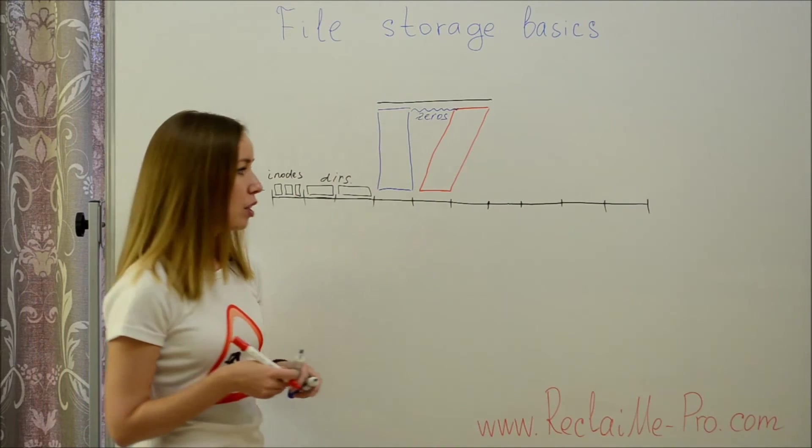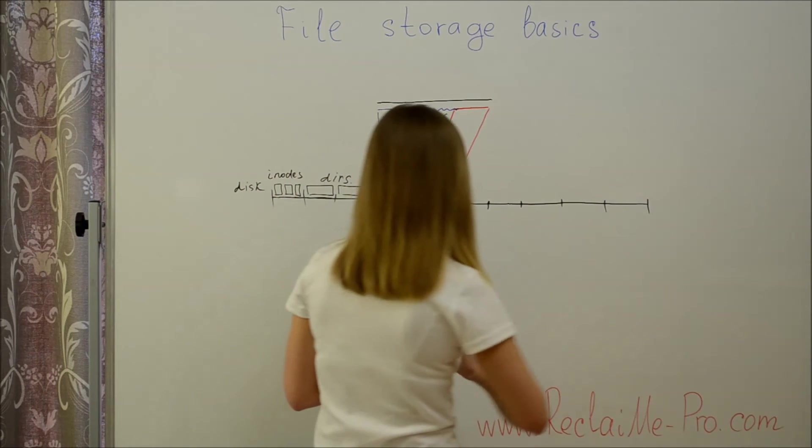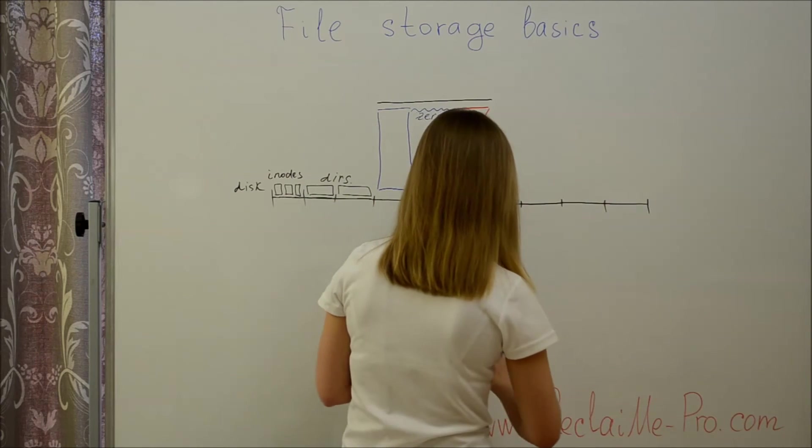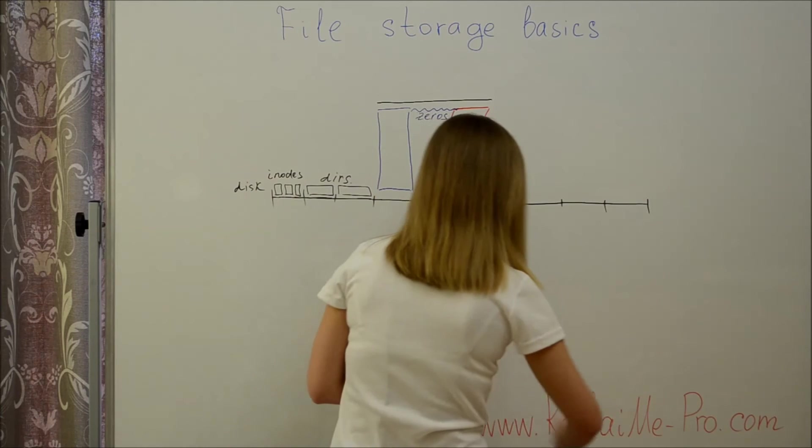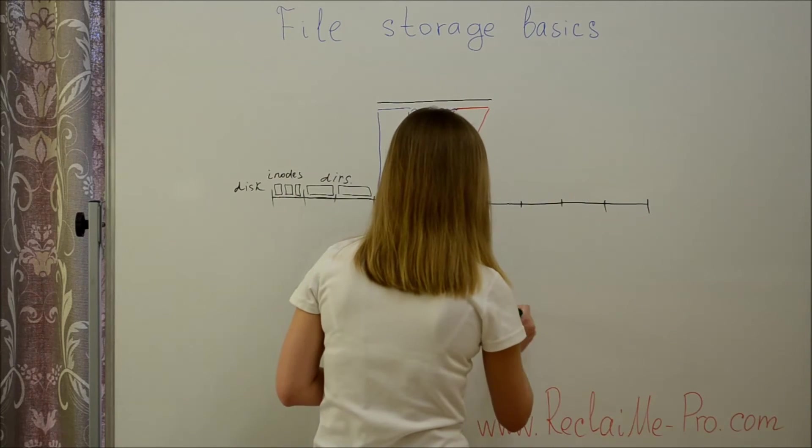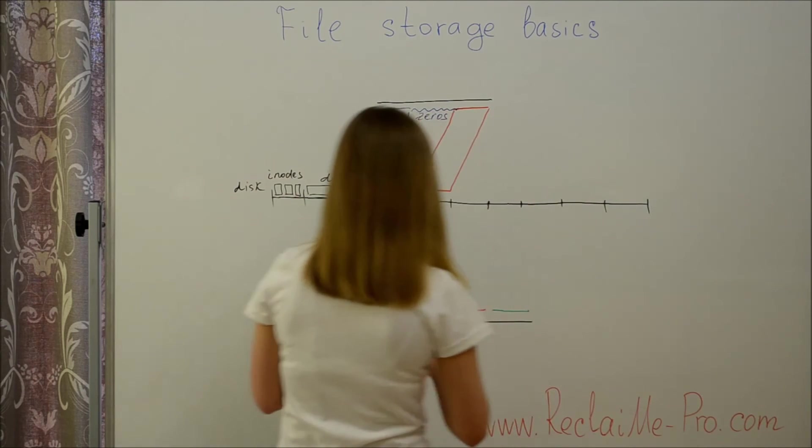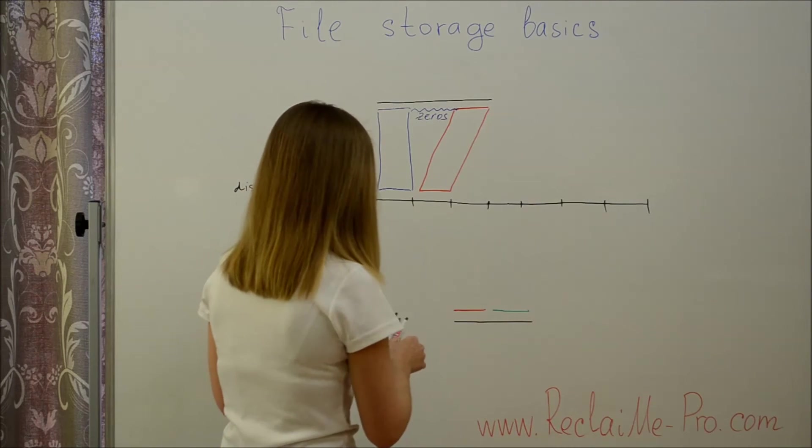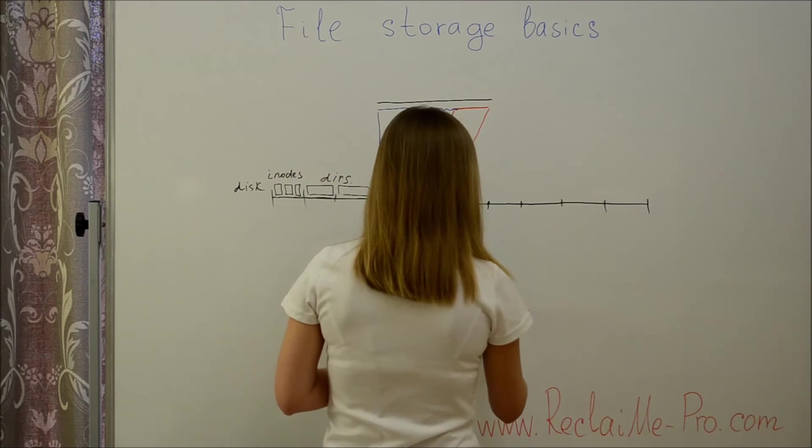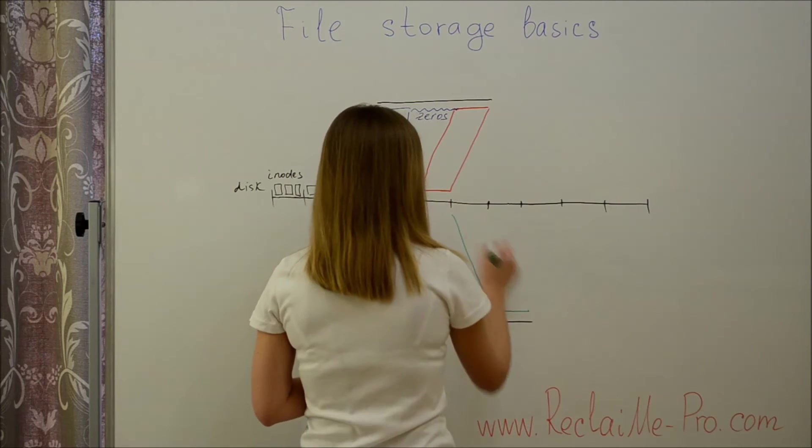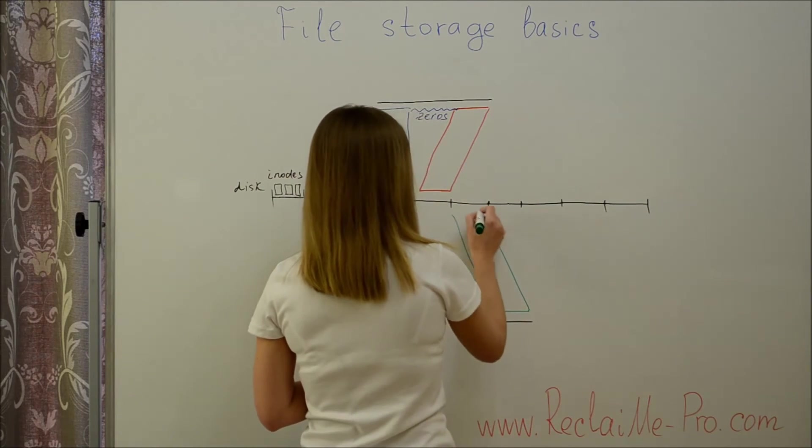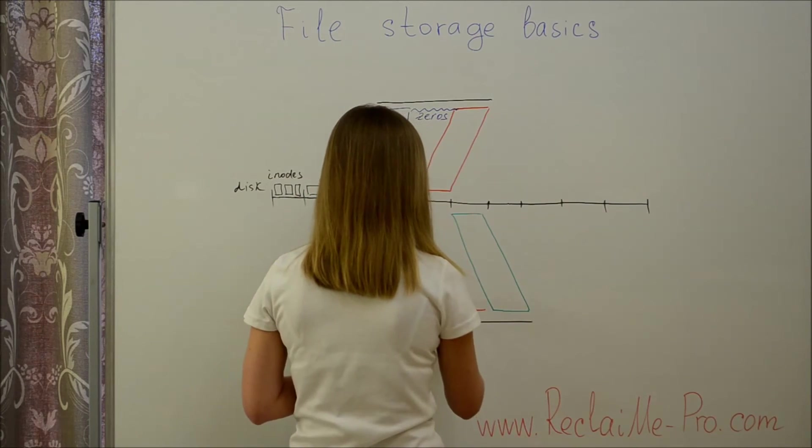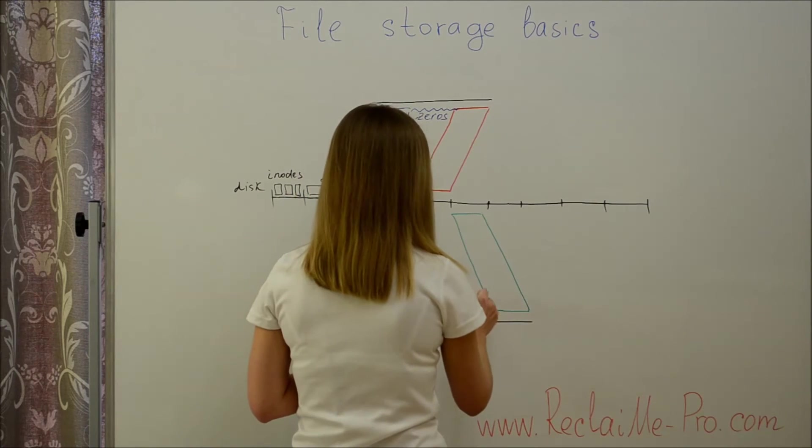The same approach can be applied to parts of the files. For example, we have a file storing a block identical to a block already stored on a disk. In this case, only the block with different data will be stored, while the block with identical data will be stored in one copy.